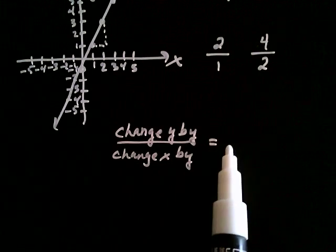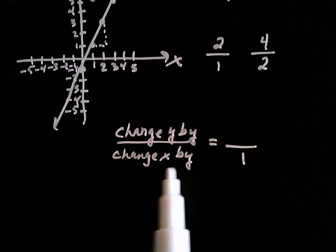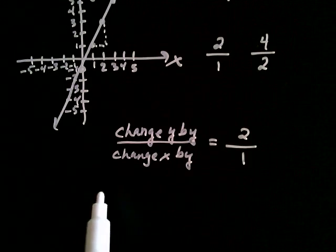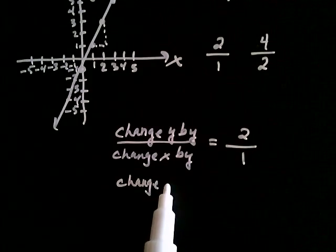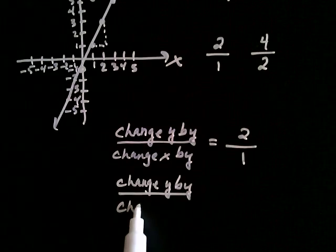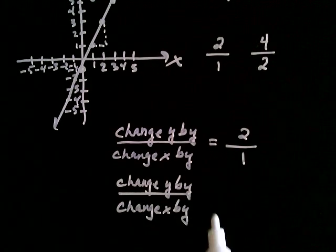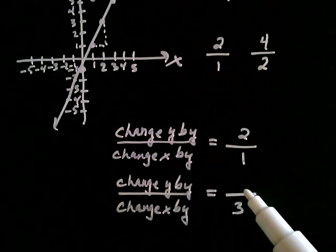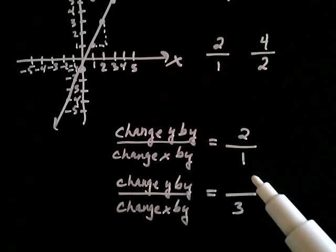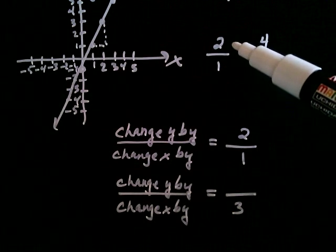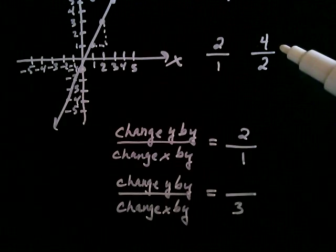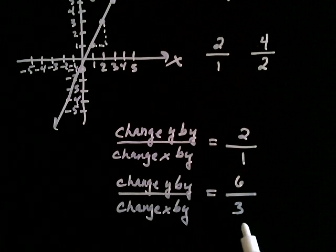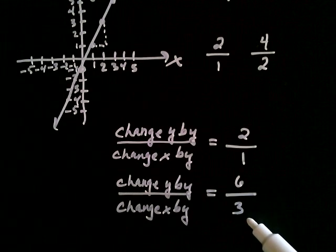So if the denominator is 1, that means we change x by 1, and you'd say: to keep up on this line, I'd have to change y by 2. Now if x changes by 3, do you really have to look at the graph? Let's look at our pattern: when x changed by 1, y changed by 2; when x changed by 2, y changed by 4. So if x changes by 3, y would have to change by 6. What you're seeing every time is that the amount y changes by is double whatever x changes by.